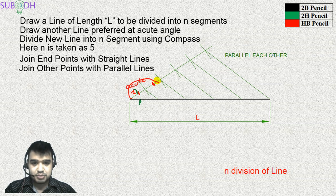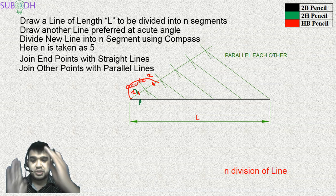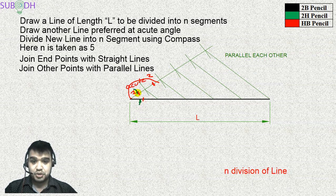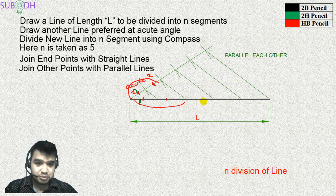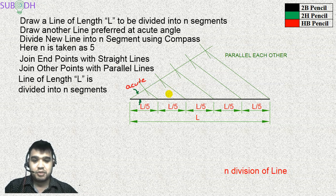Because of similar triangles, if one portion on the auxiliary line is 1 unit, the corresponding portion on the original line is also 1 unit proportionally. If it is 2 on the auxiliary line, it is 2 on the original line. So I can guarantee that the divisions are exactly equal. The total length L is divided into 5 equal segments, each of length L by 5 — giving us equal division.